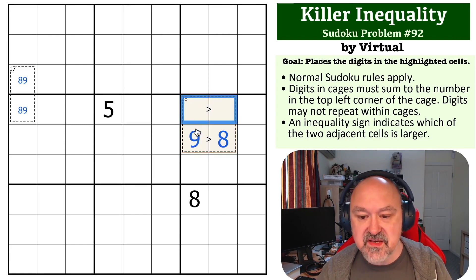And we actually get the placement of the 8, 9, forced by this 17 cage and this 8.